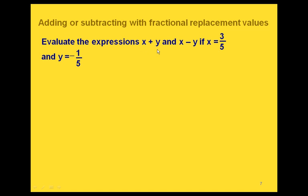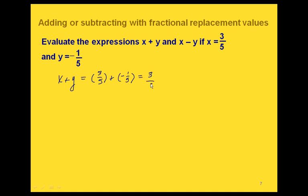We can also do operations with expressions and fractional replacement values with addition and subtraction. If we have the expressions x plus y and x minus y, let's evaluate those with some fractional values. For x plus y, putting in parentheses, the replacement value for x is 3 fifths and for y is negative 1 fifth. Let's move that negative upstairs with the 1. Now we have like fractions since both have a denominator of 5, so our new denominator is 5. For our numerator we have 3 plus a negative 1, which gives us 2 fifths, and this is already in simplest form.